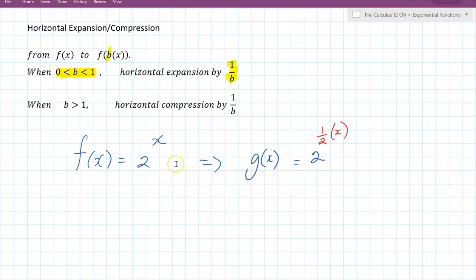So let's suppose we go back to the order parent function, y equal to 2 to the x, and we have this 2 to the 1 half x. So this 1 half right here represents the horizontal expansion by a factor of 2. Not 1 half, but 2. And it is an expansion. So you flip that.